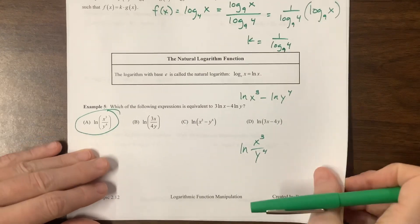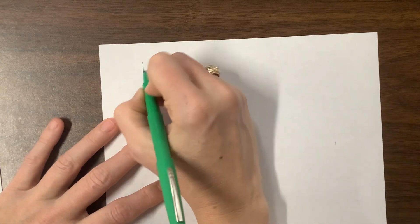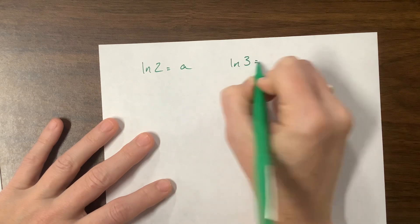One thing, I don't know. I may have put this on the practice or the review or something. We've done problems, and I haven't had a chance to look at AP Classroom. But we might see something like, it says, natural log of 2 is equal to A. Natural log of 3 is equal to B.